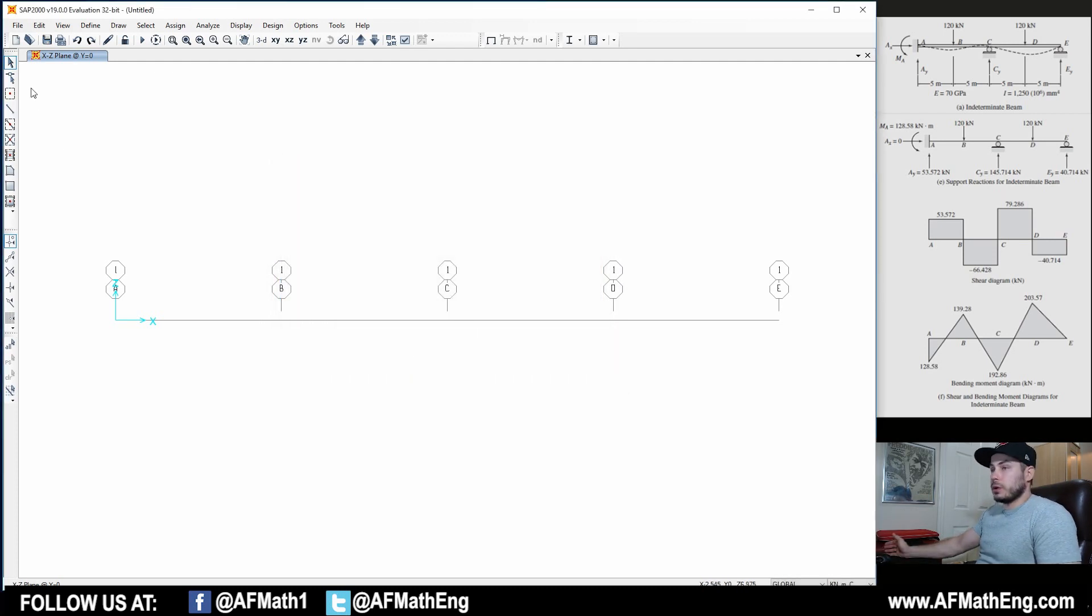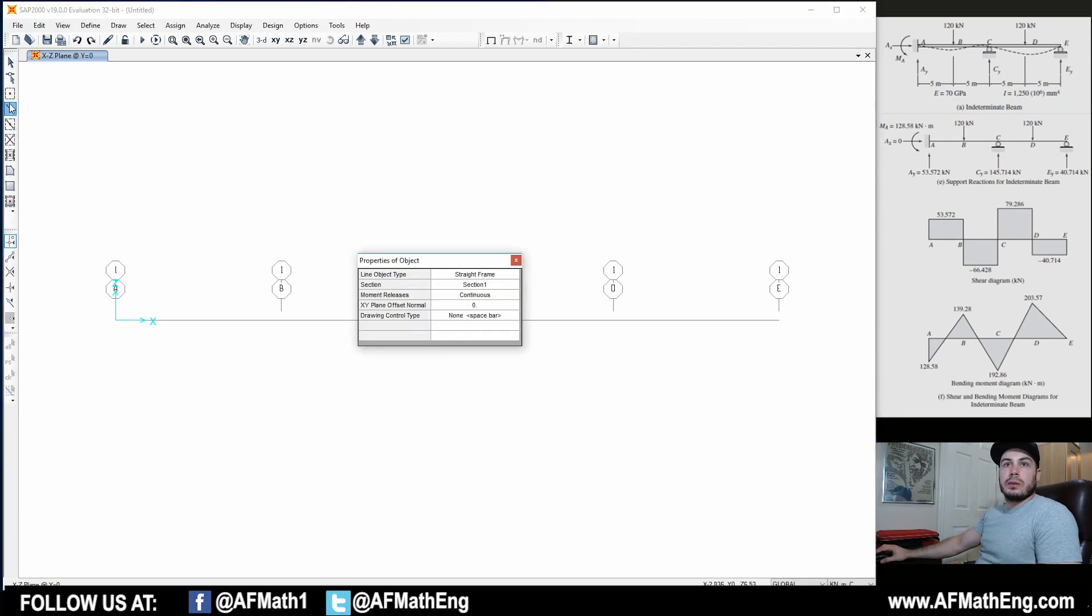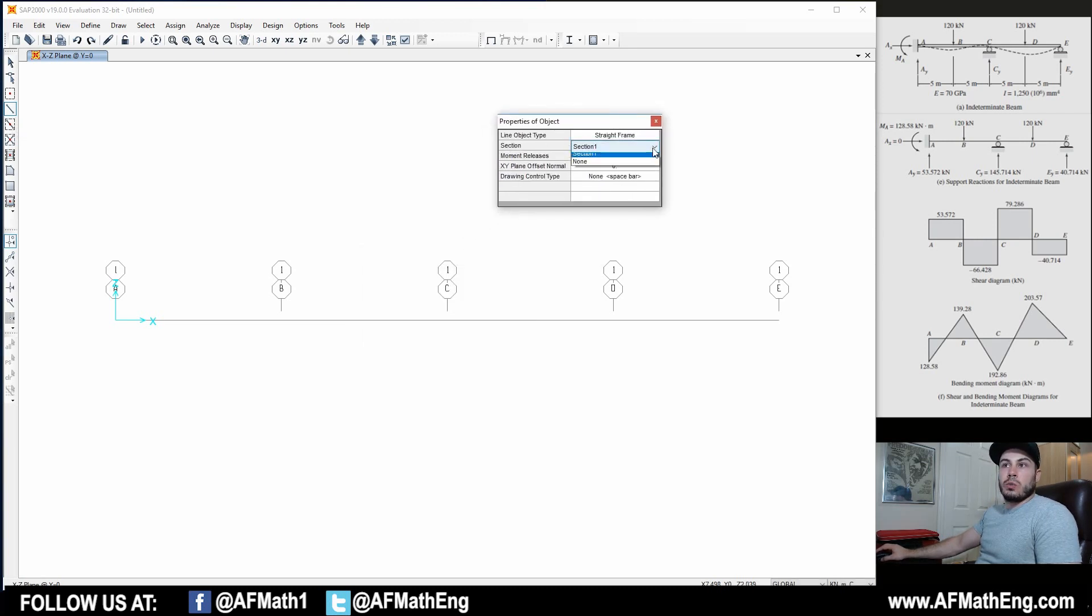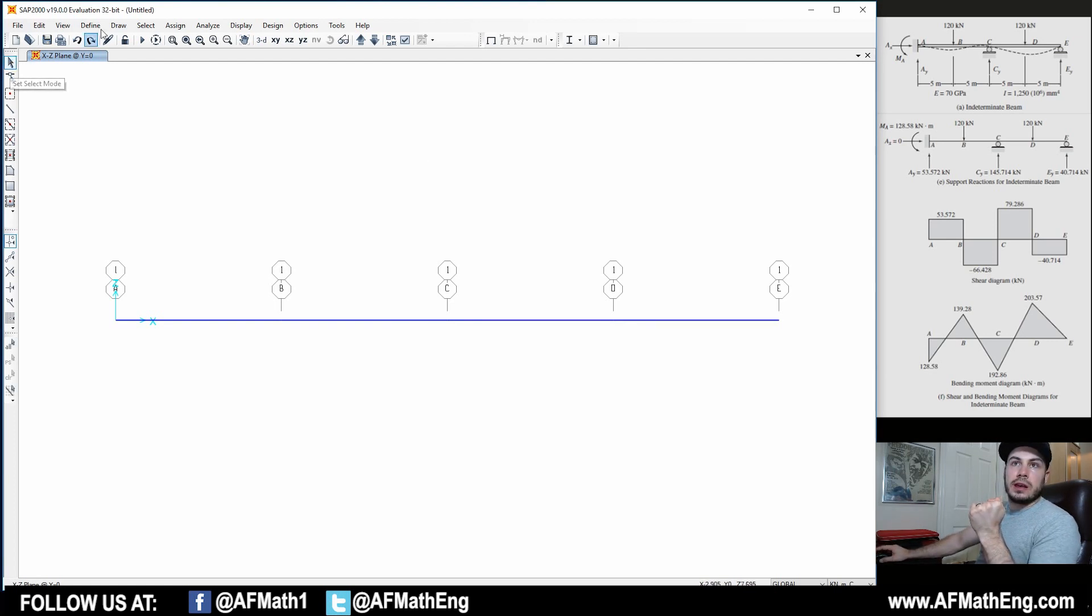Now we're actually ready to start drawing the beam. As you can see, once you get quick at this, this is a really like a 5, 10 minute check for your homework problems, just to really double check and make sure that you did it right. We're going to click here - this little line is the draw frame cable button. Click on that and we're going to make sure that section 1 is selected, the section that we defined. We're going to start drawing and we're going to stop at each node, at each point at the beam where we have a force or something that we want to assign at that point. Then at the end, we're just going to right click - that's going to end the drawing process.